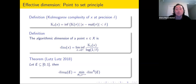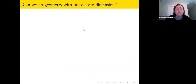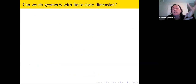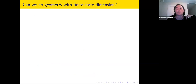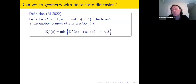Once you have this, it looks a bit more similar to the previous definition of effective dimension. So why not use this for finite state dimension? You could look at the finite state dimension of a certain point x in Euclidean space. The base B is necessary because I am looking at transducers that have input alphabet sigma_B. If you make the alphabet also a variable, it's going to be pretty different from the finite state dimension that was so heavily based on sequences written over a certain alphabet.